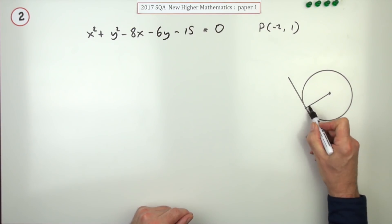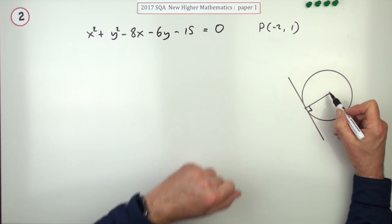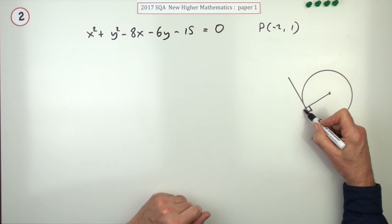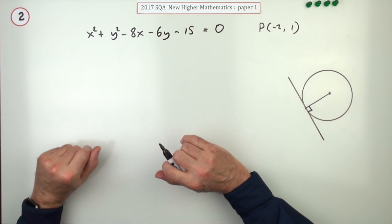To get the equation of that line, since it's perpendicular, you know the center because you can get it from that equation. You know the point P. You can get the gradient of the radius, from that the gradient of the tangent.